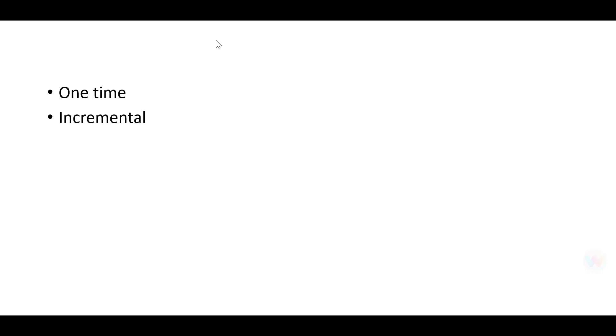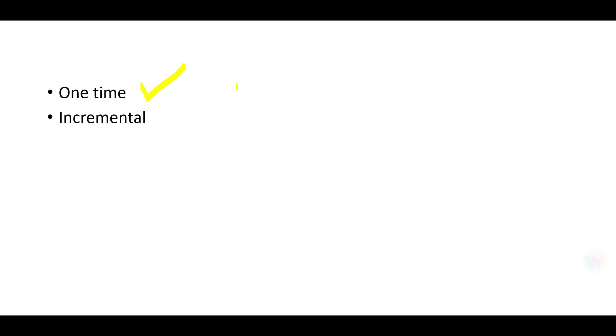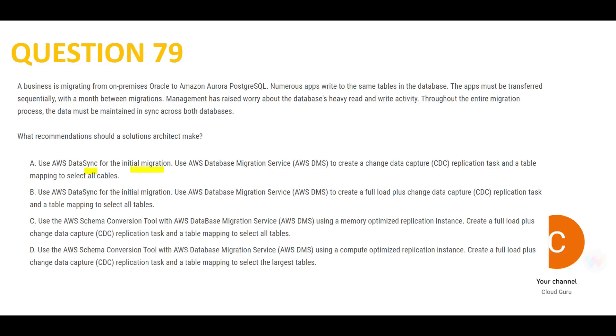Think of it like moving from one house to another. For the one-time move you hire movers and packers and move all the luggage at once. For incremental items — things arriving via courier or secondary means — you take your own car and move them one at a time. Two different problems require two different strategies.